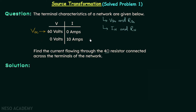Moving on to case number two: voltage is equal to zero volts and current is equal to 10 amperes. We know voltage equals zero when the terminals are short circuited, so this current of 10 amperes is the short circuit current, represented as I sub SC.